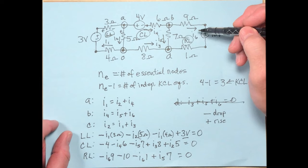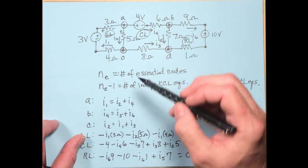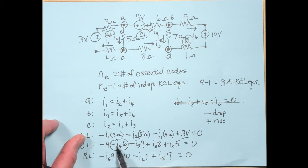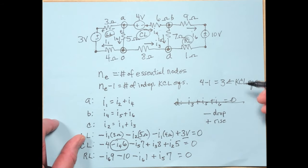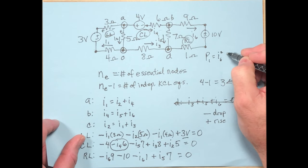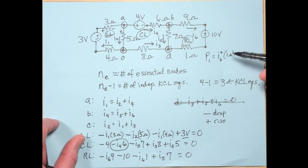The reference voltages aren't fully assigned, but current directions are. Current naturally flows from high to low potential, so we can assign polarities from the current directions. The 20-ohm and the dependent source are in parallel, so they must have the same voltage V0 with the same polarity — things in parallel have the same voltage.